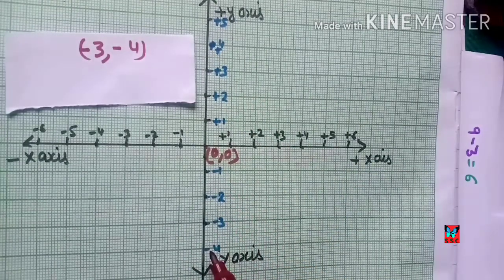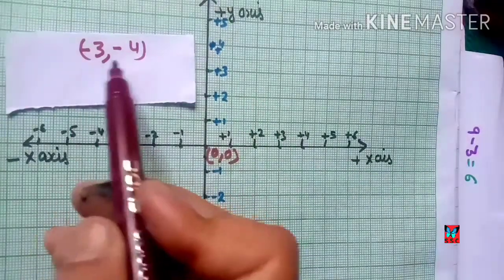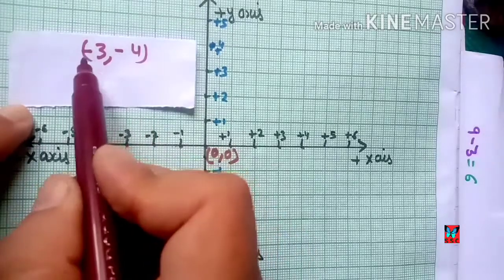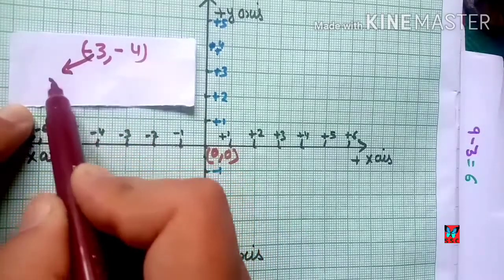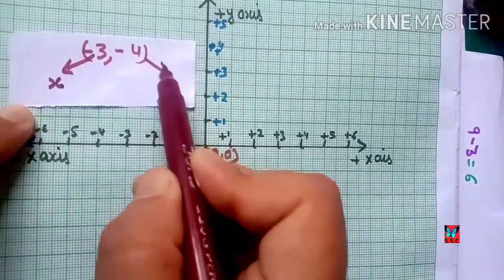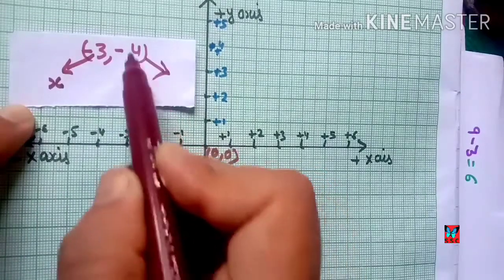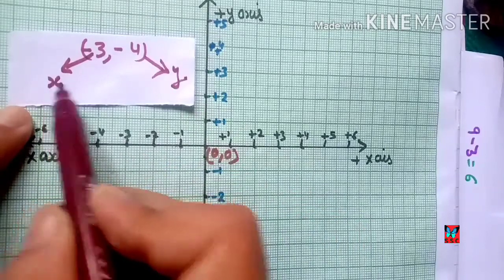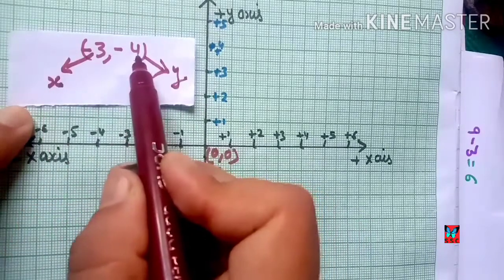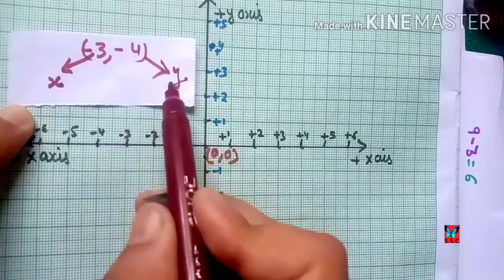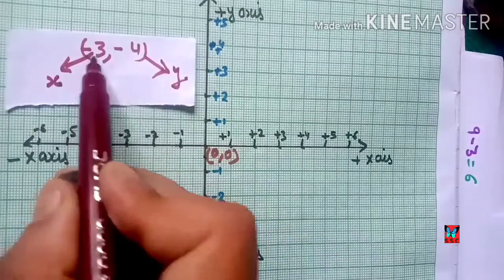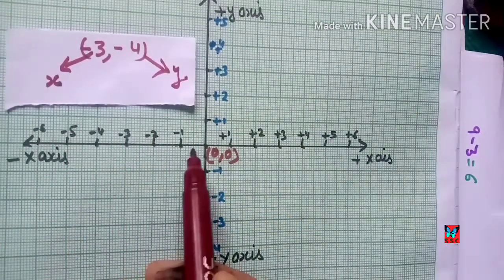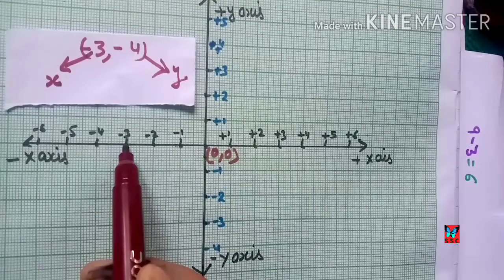Now I will plot the point (-3, -4). In an ordered pair, the first value is the x-coordinate and the second is the y-coordinate. So x-coordinate is -3 and y-coordinate is -4. For x = -3, we go on the negative x-axis, and for y = -4, we go on the negative y-axis.